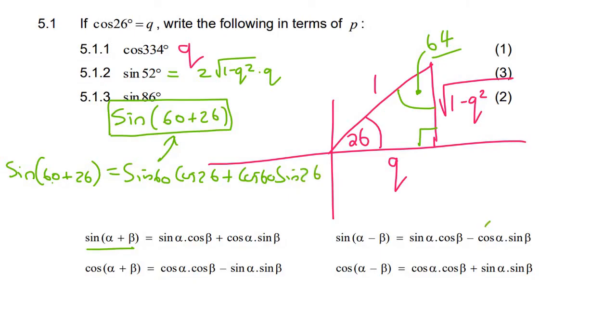Now with our special triangles, we should know that if you draw the triangle like this, this will be a 1, this will be a 2, and this will be the square root of 3. So the sin of 60 is opposite over hypotenuse, which is the square root of 3 over 2. Cos 26 we already know as q, plus cos 60 is adjacent over hypotenuse, which is 1 over 2. And then sin 26, we worked that out just now. And that was the square root of 1 minus q squared.